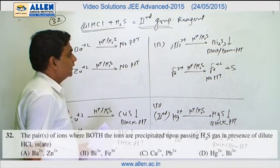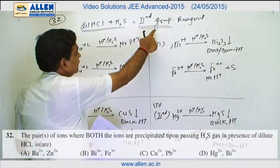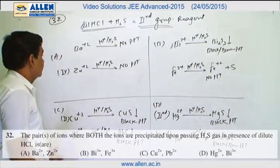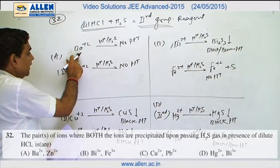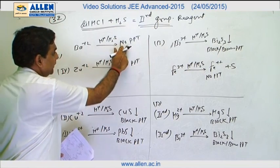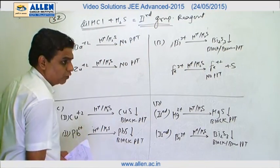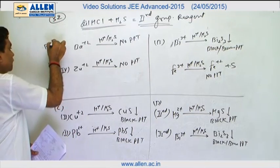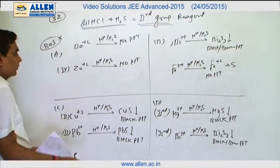Dilute HCl and H2S is the group reagent of second group cations in salt analysis. When barium plus 2 ion reacts with H2S in acidic medium, no precipitate is formed because barium sulfide is water soluble. BaS is water soluble so no precipitate forms.